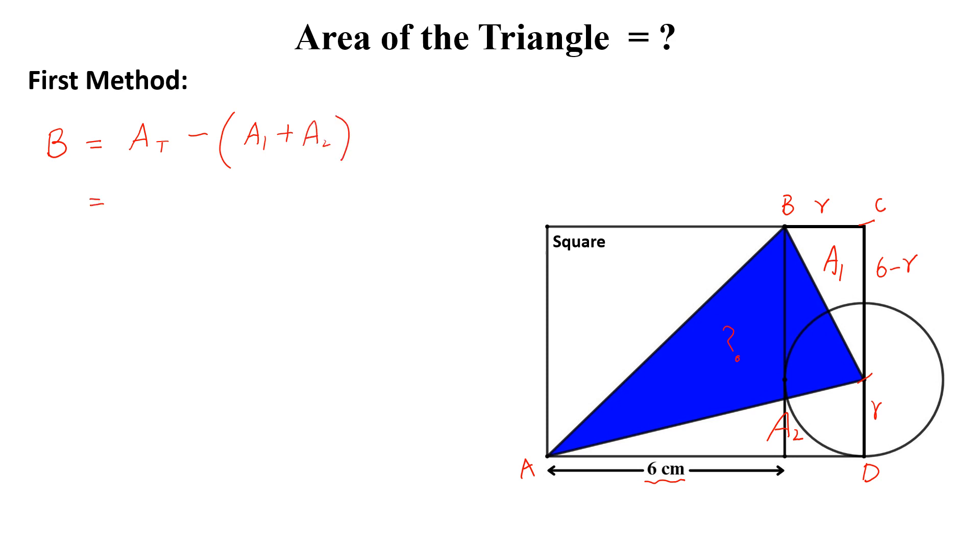Now area of the trapezium will be equal to half of 6 into r plus r plus 6. r is this and this is r plus 6 and the side of this square is 6 minus A1.